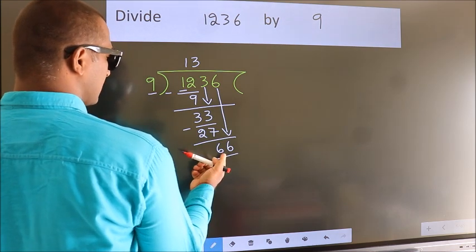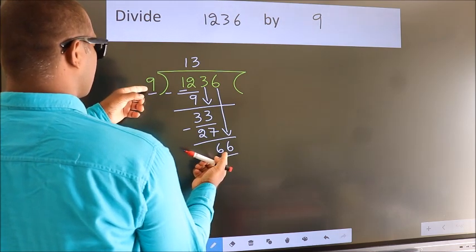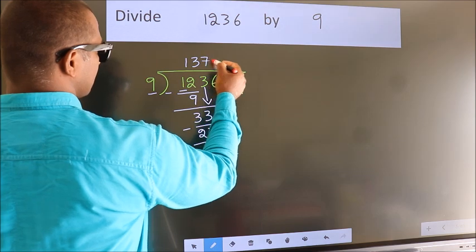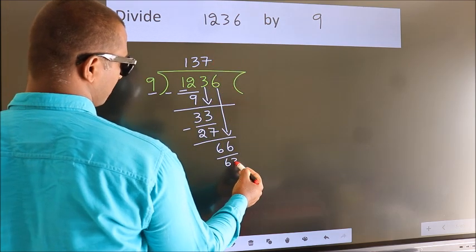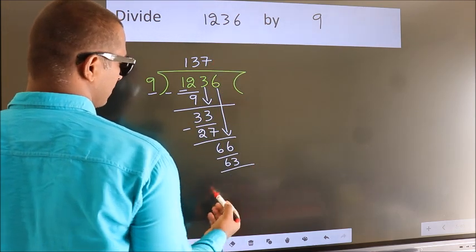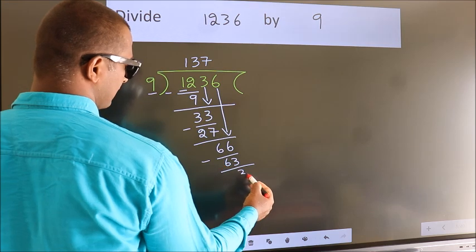A number close to 66 in the 9 table is 9 times 7, which is 63. Now we subtract. We get 3.